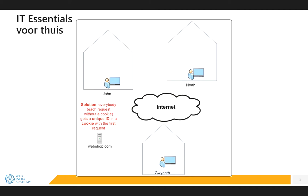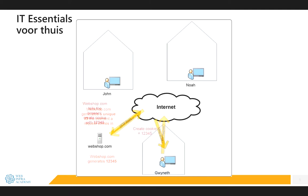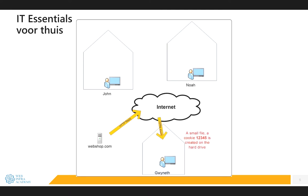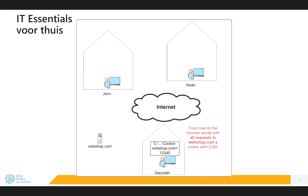We solve this problem using a cookie. Webshot.com generates a unique ID for every user in a cookie. Each request received without a cookie causes webshot.com to generate a new unique ID. The first request from Gwyneth comes in, and webshot.com generates a unique ID — say 12345. It sends a reply back to Gwyneth, ordering the browser to create a cookie with the content 12345. So the browser creates a small file on disk stating webshot.com is 12345. Now with each request sent to webshot.com, this cookie — containing the unique ID 12345 — is sent along.